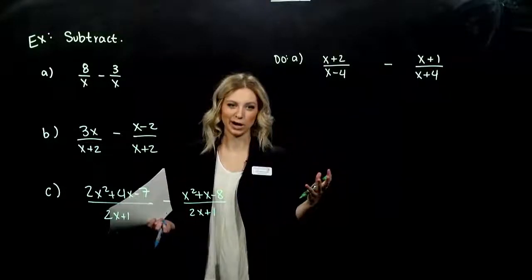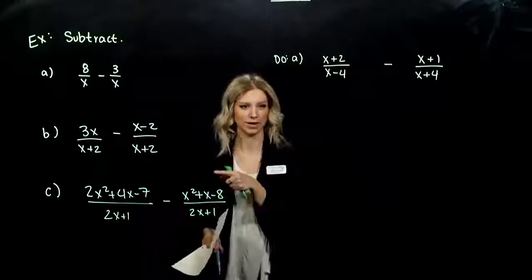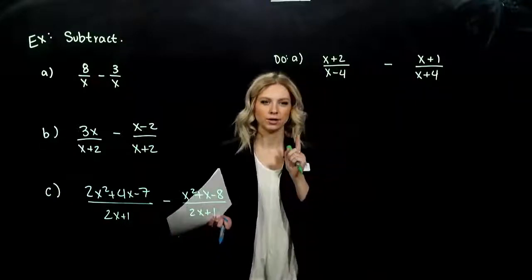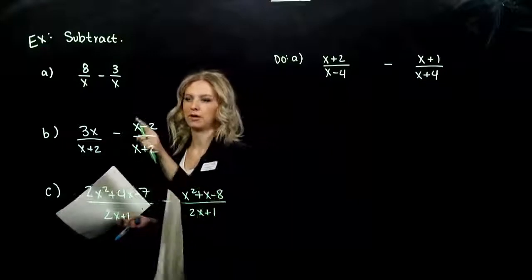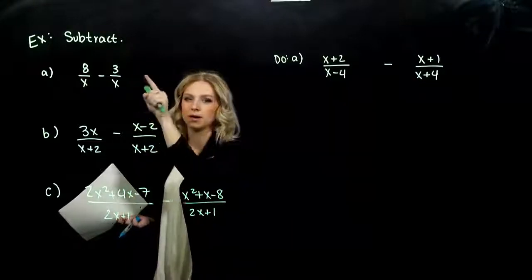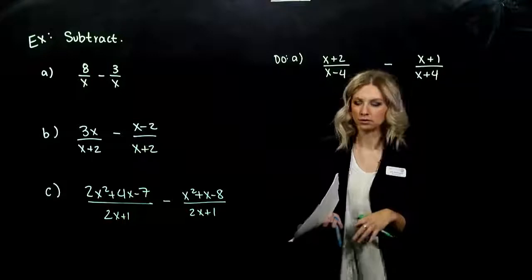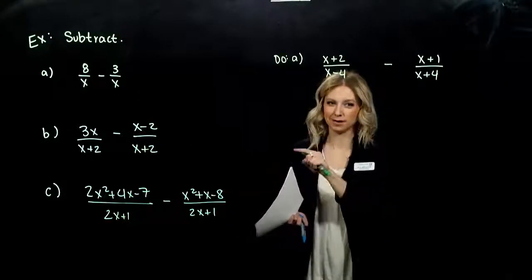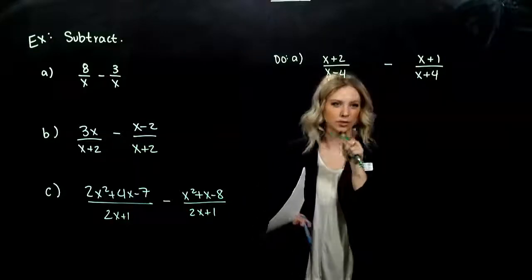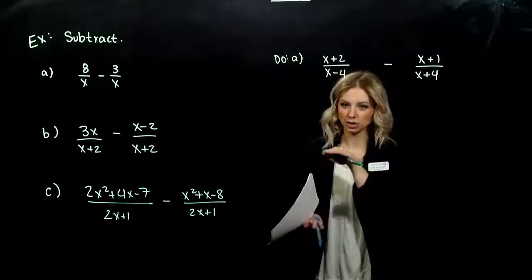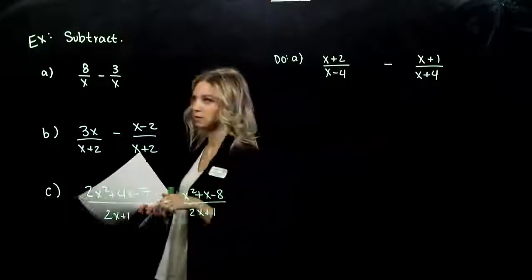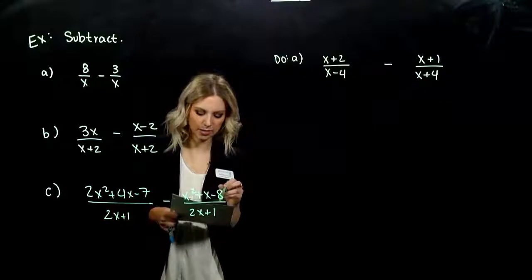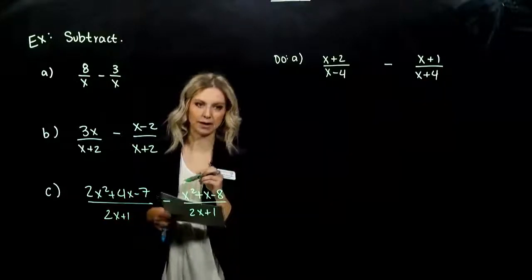We've looked at addition, and next we're looking at subtraction. It's the same exact concept, but we have to be super careful to group together what comes together on our second term, or third if we have more than two, because that subtraction sign is very important. We have to give it to every single term up top, not just the very first one. When the denominators are the same, we subtract the numerators and keep the same denominator.